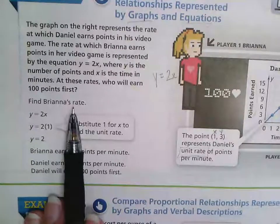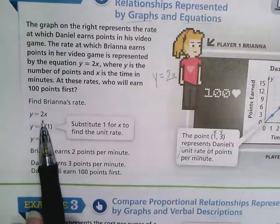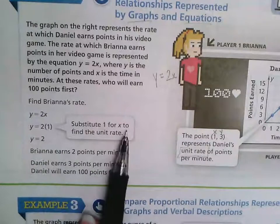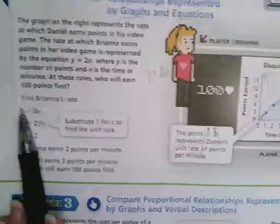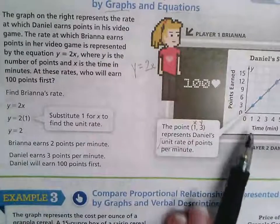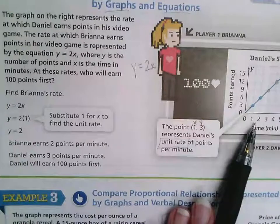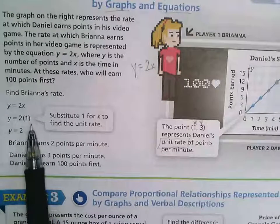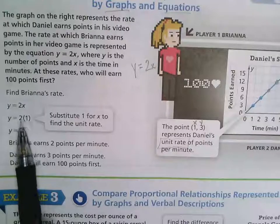You can see that they substituted 1 in for x, because one is one minute. That's what the x value is standing for, the time in minutes. And then they multiplied 2 times the 1 and they got 2.